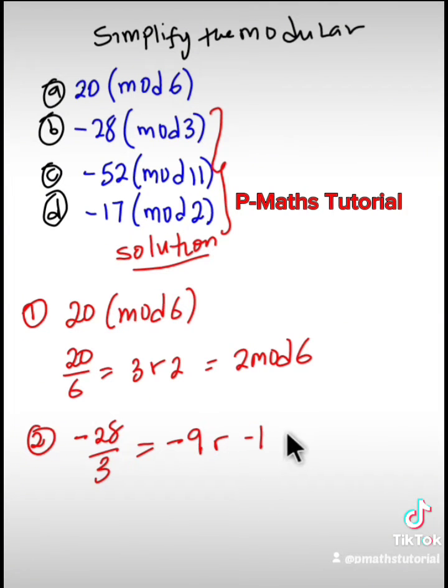Instead of picking negative 1 as our remainder and the modulo, we add our divisor which is 3 to it. Minus 1 plus 3 would give us 2. Therefore the modulo is 2 in mode 3.